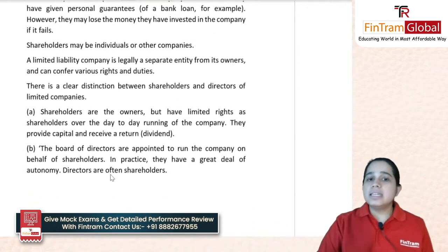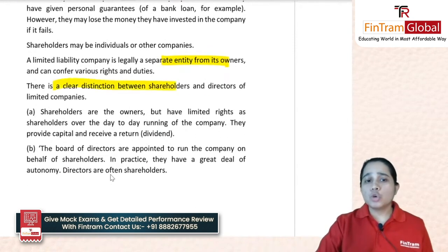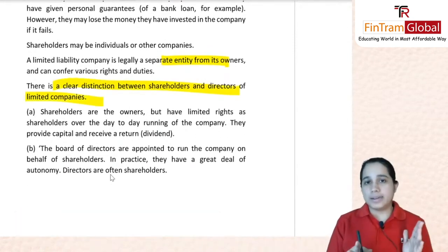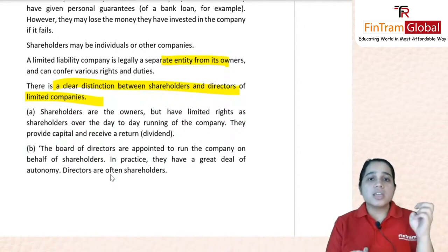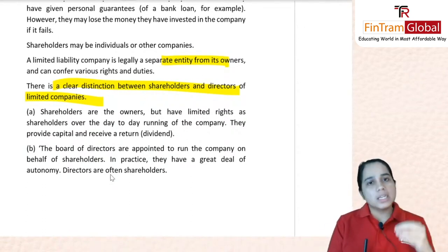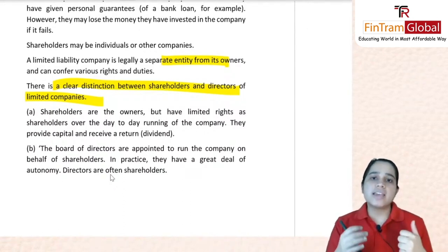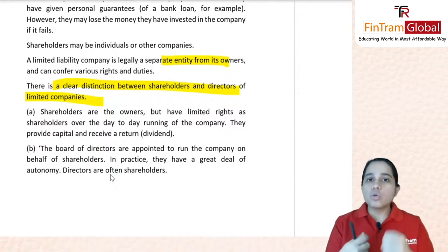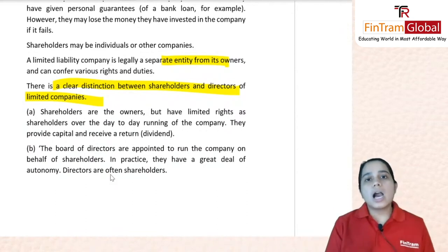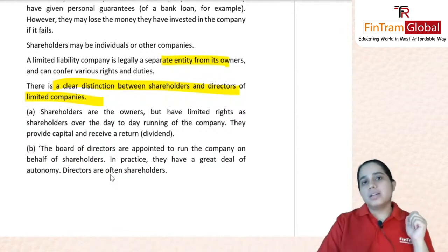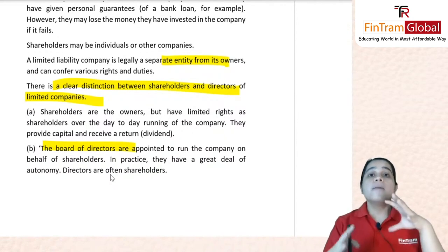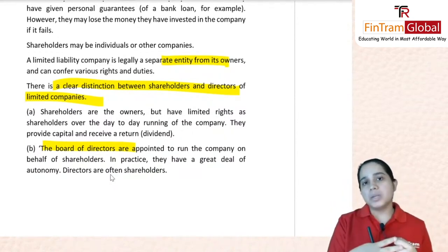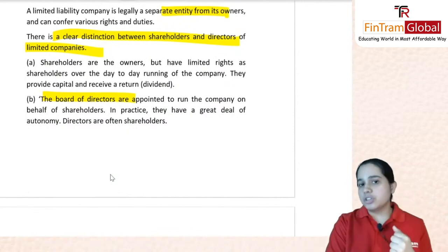A limited liability company is a legally separate entity from its owners. There is a distinction between shareholders and directors: directors may also be shareholders, but directors handle the day-to-day operations of the company on behalf of the shareholders. Shareholders are the owners but have limited rights in day-to-day operations. The board of directors runs the company on behalf of the shareholders. Since you get the benefit of limited liability when registered as a company, reporting requirements also come along with it.